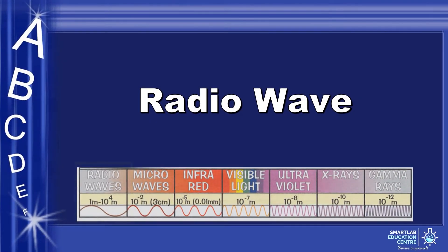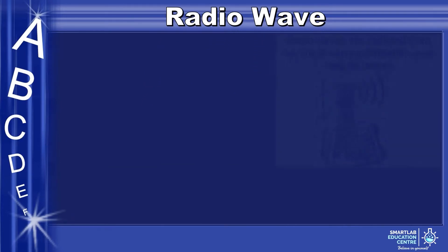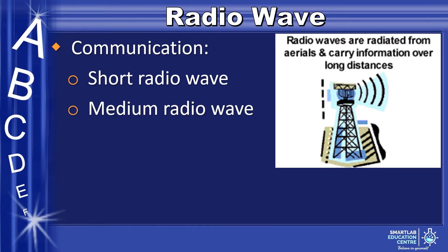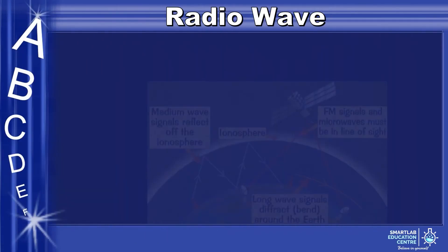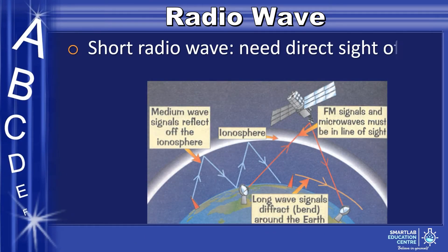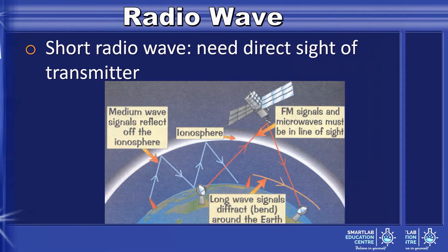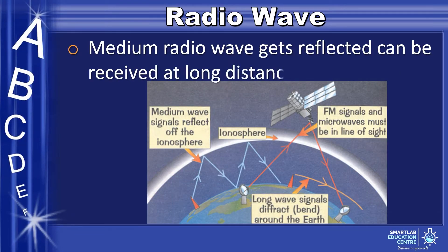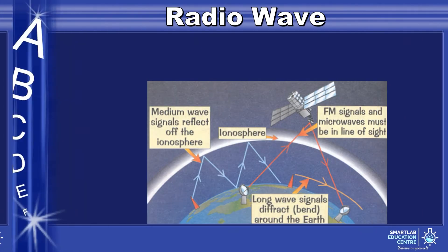Lastly, radio wave. Radio waves are used in communication. They are categorized into short radio wave, medium radio wave, and long radio wave. Short radio waves need direct line of sight to the transmitter. Medium radio waves get reflected off the atmosphere and can be received at long distances. Long radio waves can be transmitted through tunnels.